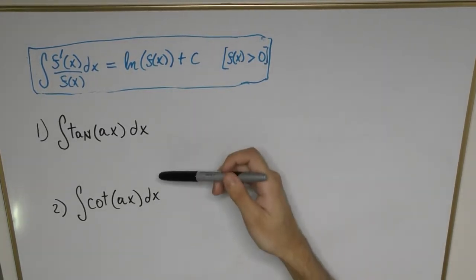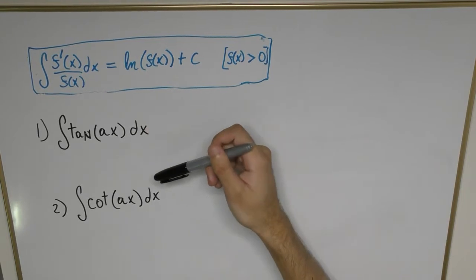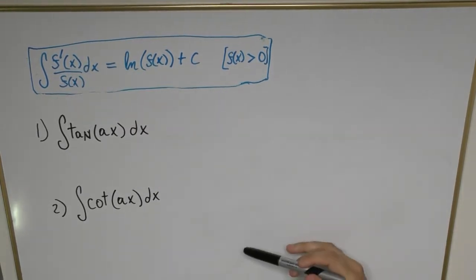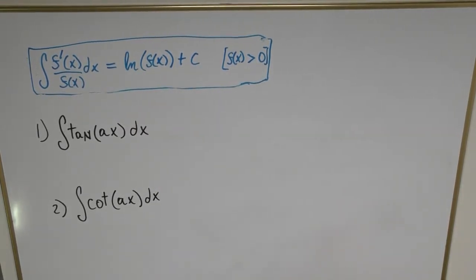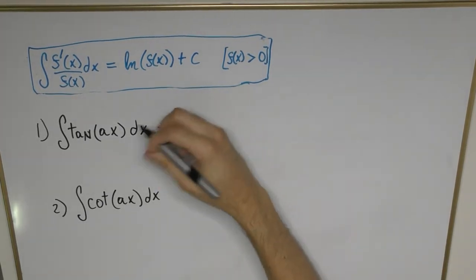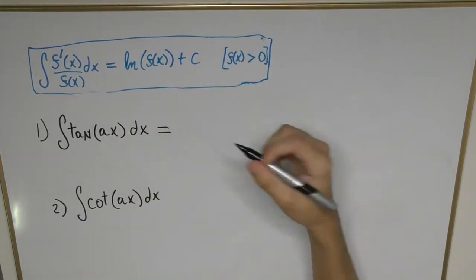At first glance, you might wonder what tangent and cotangent functions have to do with rational functions. That's a good question, because the tangent function is nothing